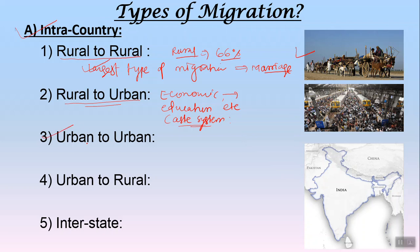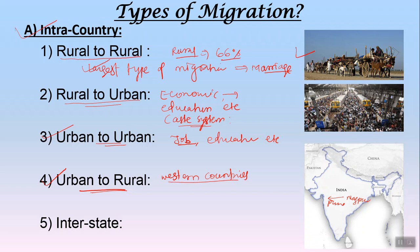Another type is urban to urban migration — moving from one city to another, like Nagpur to Pune — due to jobs or education. Urban to rural migration is an emerging trend, more predominant in Western countries where after retirement, senior citizens move to rural areas for cleaner environments. In India, this is now emerging — people earn in urban areas, then purchase land in rural areas and shift there, partly to avoid pollution in cities like Delhi.